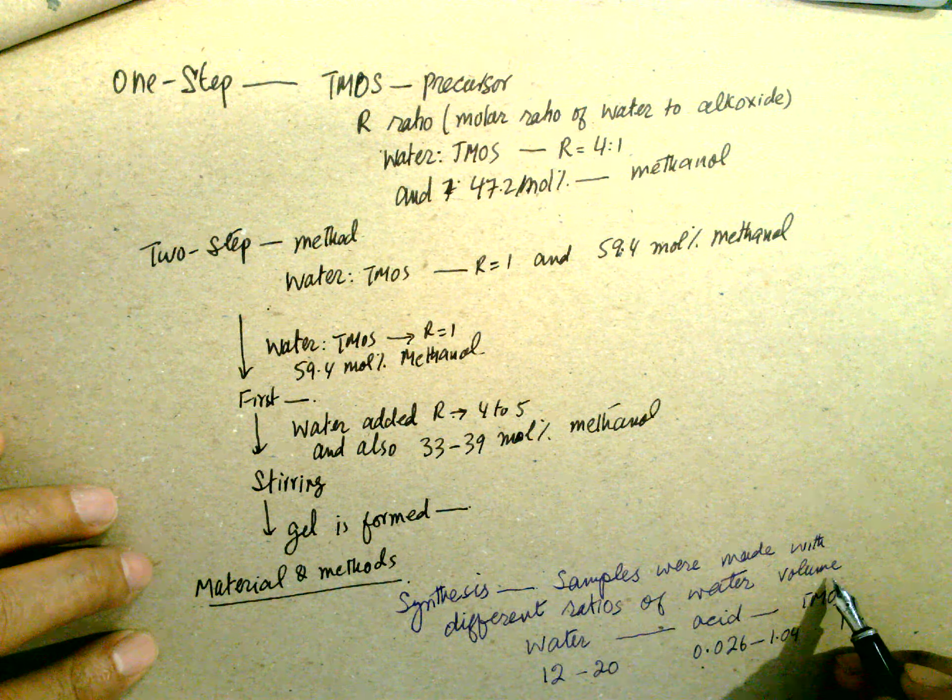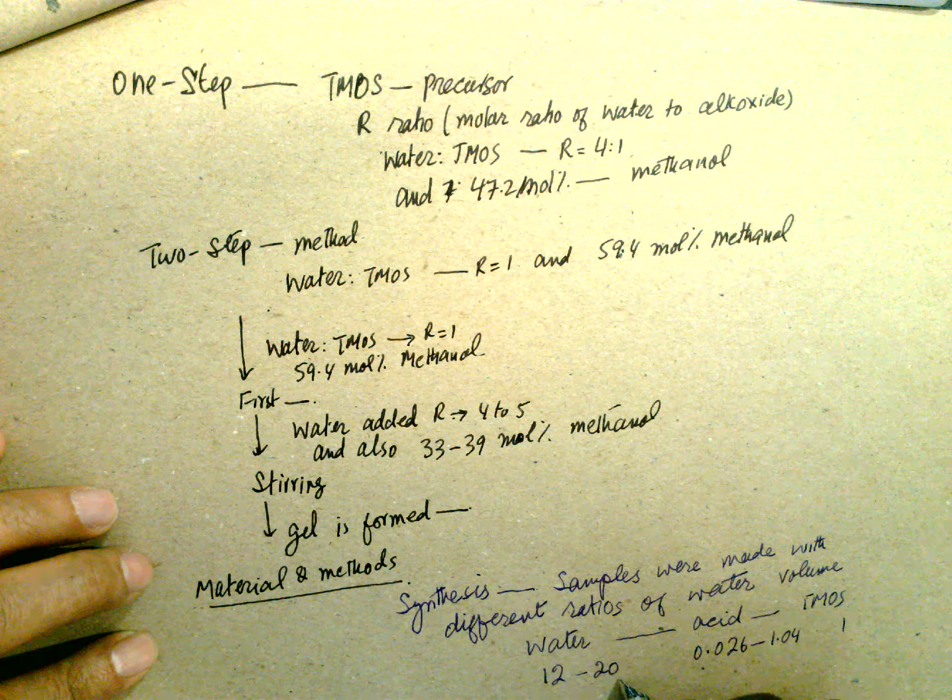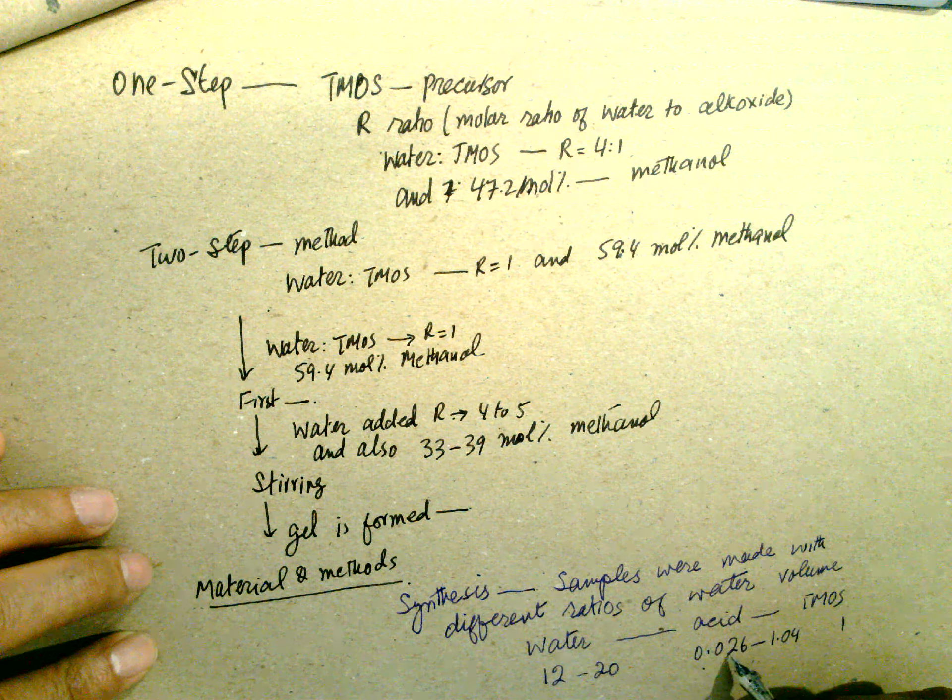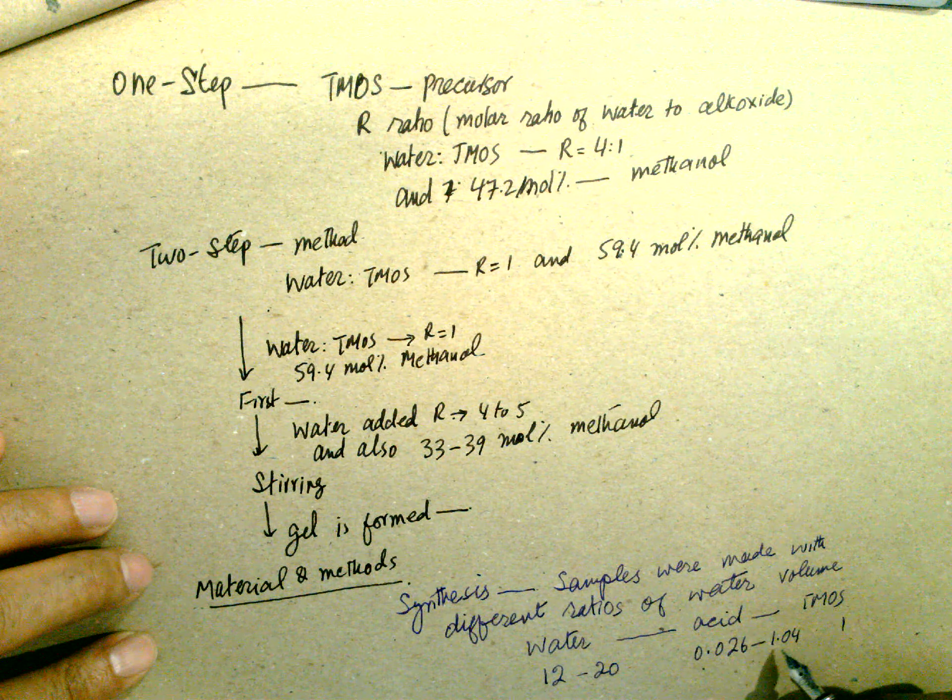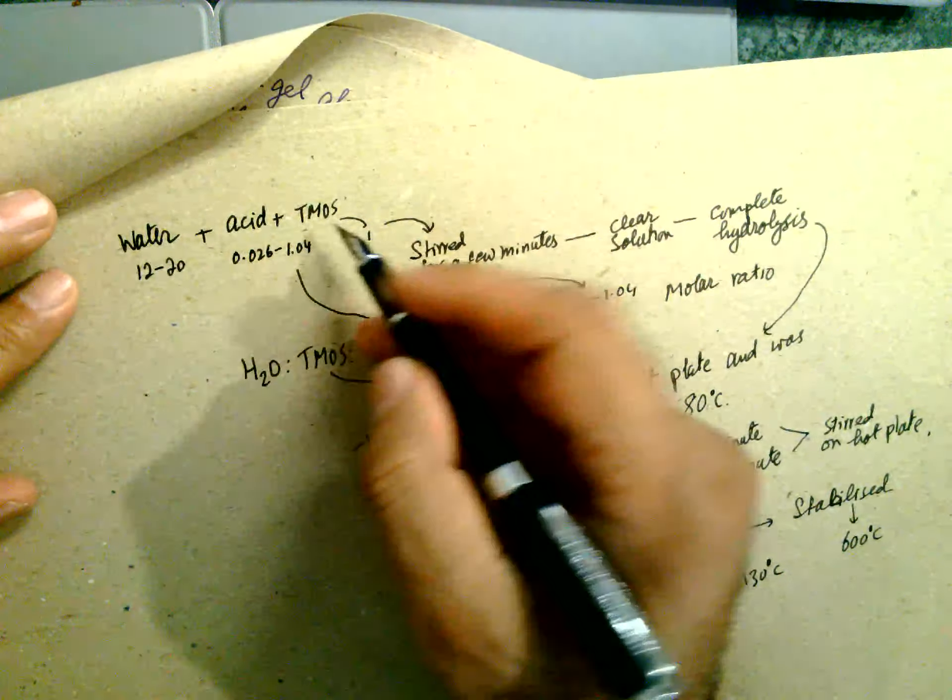The material methods: the synthesis samples were made with different ratios of water volume. Water, acid, and TMOS are 12. Water is 12 to 20, acid is 0.026 to 1.04, and TMOS is 1.